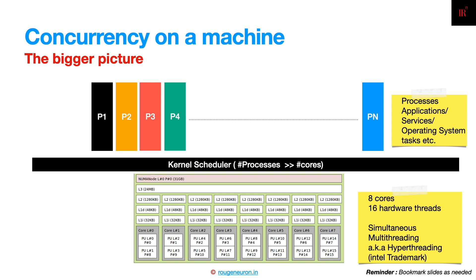On top of the kernel scheduler there will be a number of processes running on the system. These processes could be applications, services, or operating system tasks running to manage the whole system for a particular user.